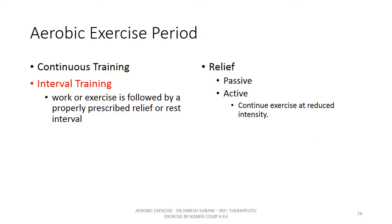Interval training means some duration of exercise is followed by some duration of relief. The relief may be of two types: passive relief and active relief. For example, in interval training with passive relief, the person does active exercise like jogging for five minutes and then sits down and takes complete rest for one minute, then again performs five minutes jogging and one minute rest.